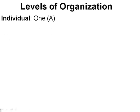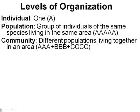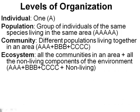We have several different levels of organization in ecology. Our smallest level is the individual, or one. Our next level is a population — a group of individuals of the same species living in the same area. Third, we have our community, which are different populations living together in one area. Next, we have the ecosystem — all the communities in an area and all the non-living components of that environment.